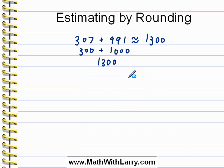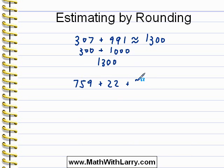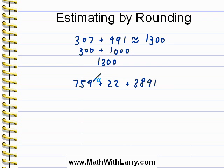In this case we're estimating our answers by rounding — there are other ways to estimate that we'll learn. Let's do another example: 759 plus 22 plus 3,891. There's no real right or wrong way to do this. You have to look at the problem and see what kind of makes sense for the best way to round. In the case of this first number, it's roughly halfway between 700 and 800, so I'm not going to round to the nearest 100. What makes sense here is to round to the nearest 10, making it 760.